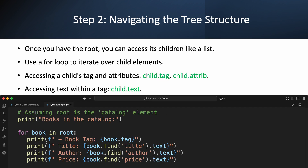Now that we have the root, let's start moving through the tree. An element object in Python, like our root, can be treated like a list of its children. This means we can use a simple for loop to go through each child element one by one. In this example, let's imagine our XML file has a root element called catalog, and inside it are a bunch of book elements. Our for loop — for book in root — will go through each of those book elements. Inside the loop, we can print out the tag using book.tag. To find a specific child element, we use the find method. So book.find('title') will find the title element inside the current book. Then we can grab the text inside that element using .text. This lets us pull out the title, author, and price of each book.